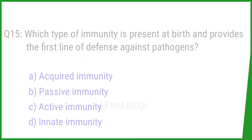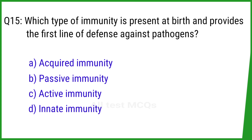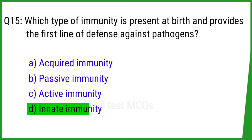Question number 15. Which type of immunity is present at birth and provides the first line of defense against pathogens? The right answer is option D: Innate immunity.